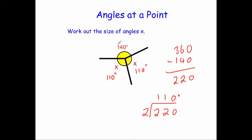Let's just check it: 140 plus 110 plus 110, that's going to be 360. So the main thing is, the angles at a point will always add to 360. If you've been asked to find missing angles, generally you will add up together the angles you've been given and take them away from 360.